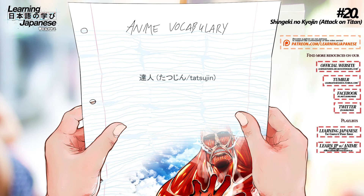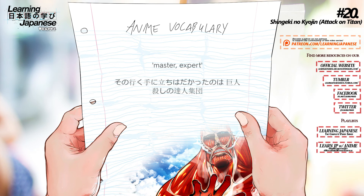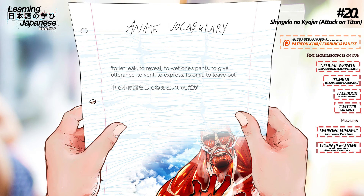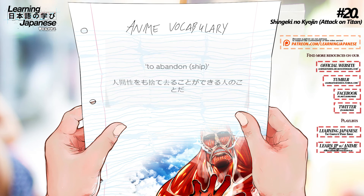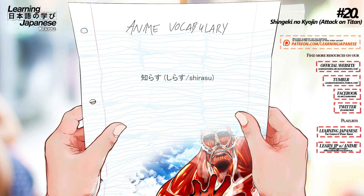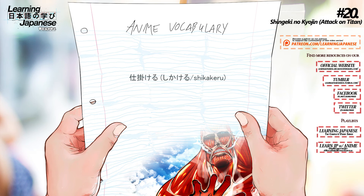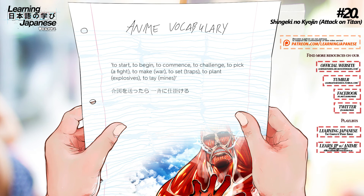達人 (tatsujin) — Master, expert. 漏らす (morasu) — To let leak, to reveal, to give utterance, to express, to omit. 捨てさる (sutesar) — To abandon. 知らす (shirasu) — To inform, to notify, to know, to reign. 仕掛ける (shikakeru) — To start, to begin, to commence, to challenge, to pick, to make, to set, to plan, to lay.